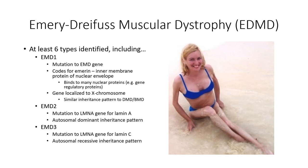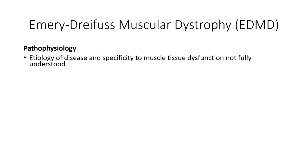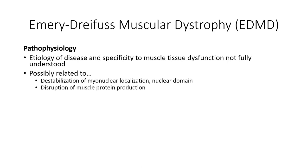Similar to dystrophin, Emerin is found on the X chromosome and therefore demonstrates an X-linked inheritance pattern. Variants 2 and 3 involve mutations in Lamin A and Lamin C proteins, which are also found associated with the inner nuclear envelope. The variant affecting Lamin A has an autosomal dominant expression pattern, while that for Lamin C is autosomal recessive. The pathophysiology of the disease is not clearly understood, as these proteins are ubiquitously expressed throughout the body, but the most pronounced effects are on certain skeletal muscles as well as cardiac muscle.